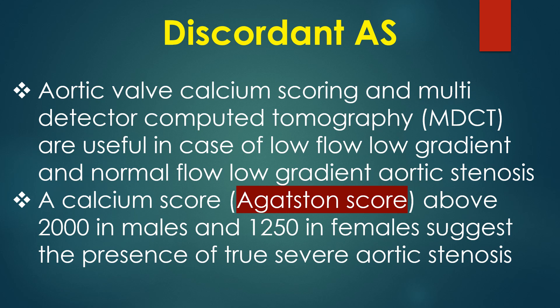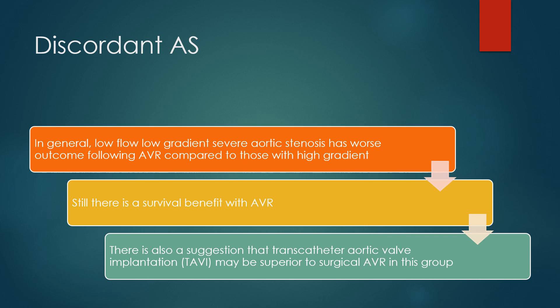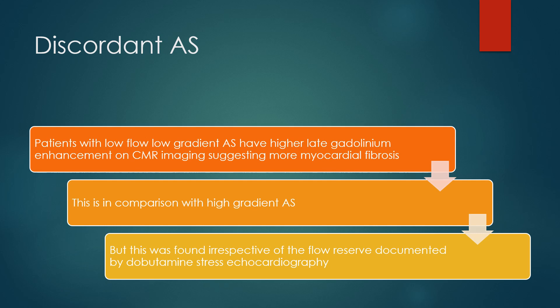A calcium score above 2000 in males and 1250 in females suggests the presence of true severe aortic stenosis. Low flow low gradient severe aortic stenosis has worse outcome following aortic valve replacement compared to those with high gradient, though there is still a survival benefit with AVR. There is also a suggestion that TAVI may be superior to surgical AVR in this group. Patients with low flow low gradient aortic stenosis have higher late gadolinium enhancement on cardiac MRI suggesting more myocardial fibrosis, irrespective of flow reserve documented by dobutamine stress echocardiography.